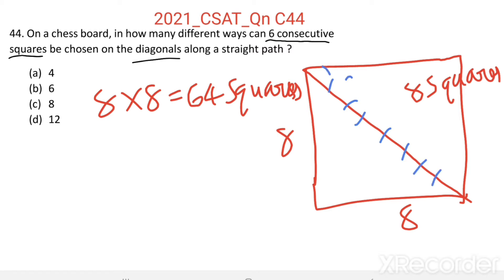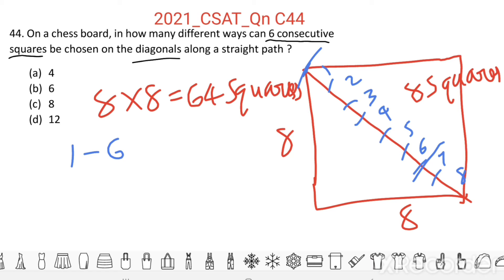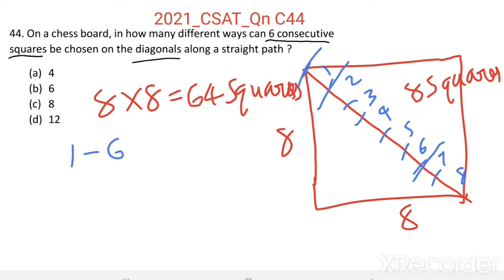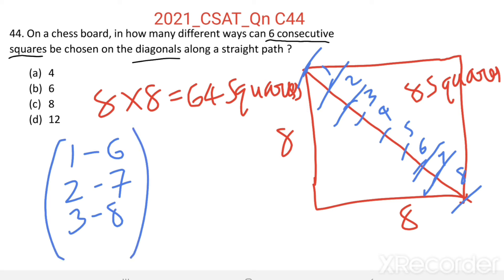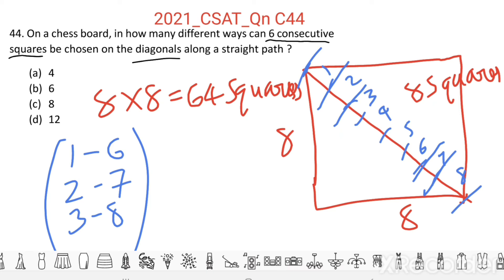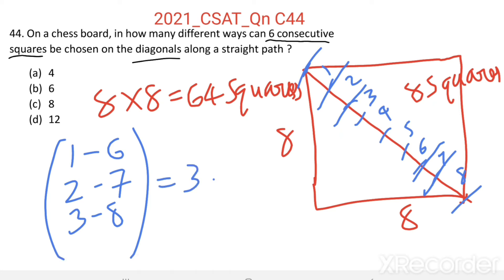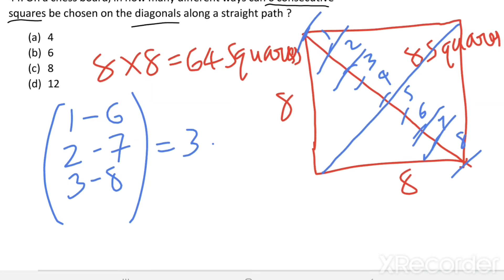Here: one, two, three, four, five, six, seven, eight. From square one to square six we get one set of six consecutive squares. Then two to seven gives another set, and three to eight gives a third set. So there are three ways to choose six consecutive squares along one diagonal.